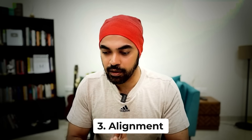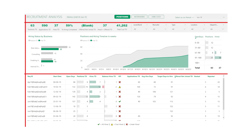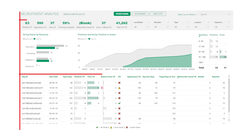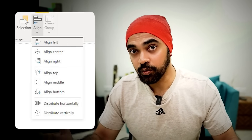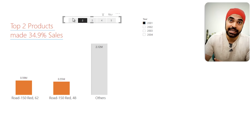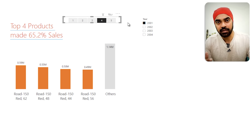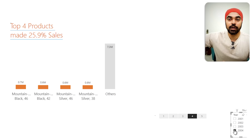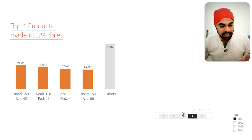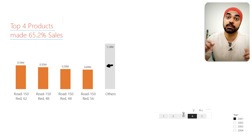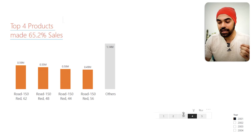The third element is Alignment — simply aligning things well on the dashboard will massively improve its look, feel, and presentability. A lot of people miss this, and there are many tools in Power BI to help with it. The last element is Proximity — things that relate to one another should be kept together. For example, if a slicer affects only one chart, keep it near that chart so the user understands the relationship. Many dashboards are lacking this — related things must be proximate to one another.